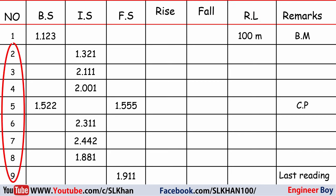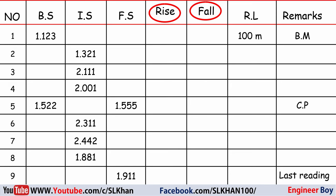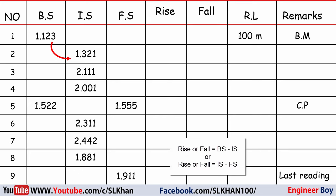We need to determine the RL of the remaining points — from point 2 to 9 — and we do that by getting the rise and fall at each point. We get rise and fall by subtracting the intersite from the backsight, or the foresight from the intersite. If the result is positive, place the value in the rise column; if negative, place it in the fall column.